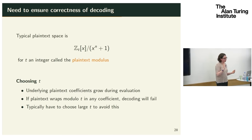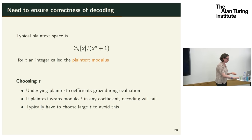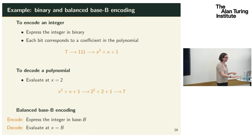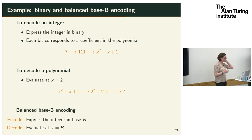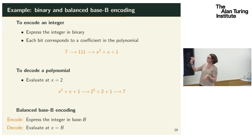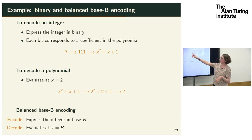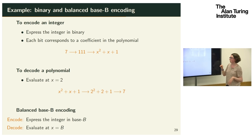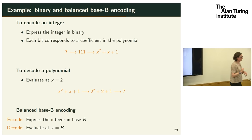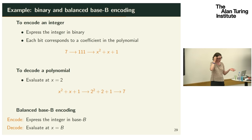As a concrete encoding example, consider binary encoding: write the integer in binary, and the bits become polynomial coefficients. For example, 7 encodes to 1 + x + x^2. Decoding evaluates the polynomial at 2. This naturally generalizes to base B: encode using a balanced base-B representation (keeping coefficients small), and decode by evaluating at x = B.